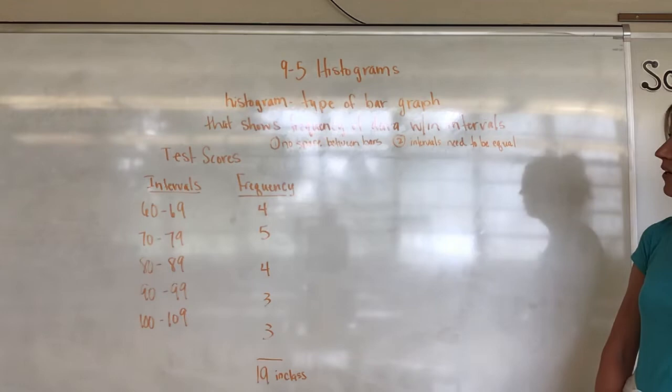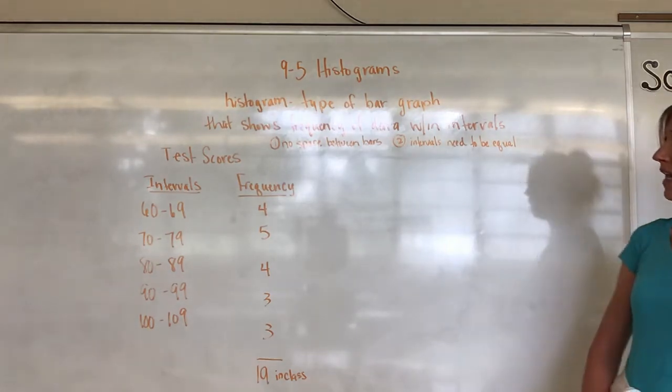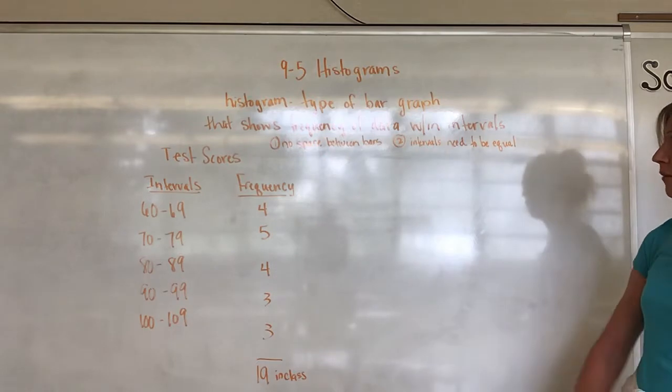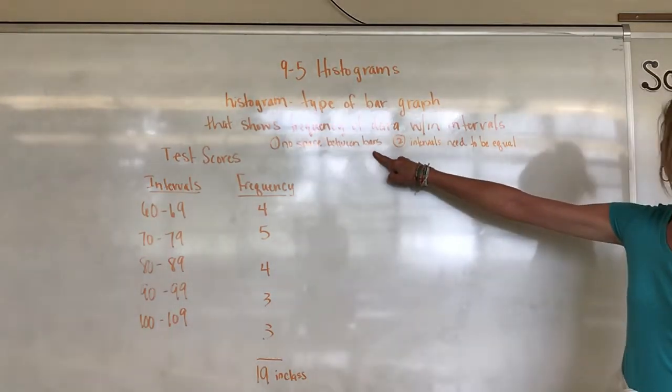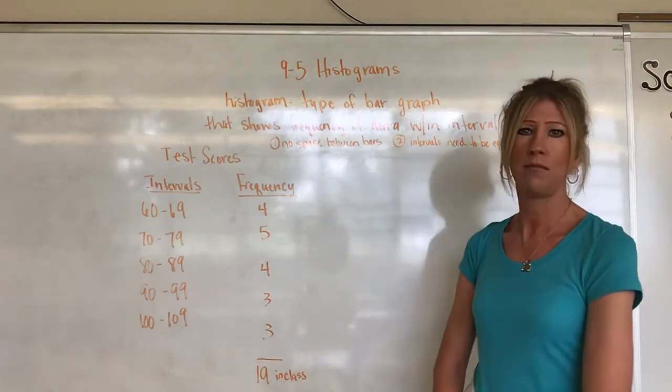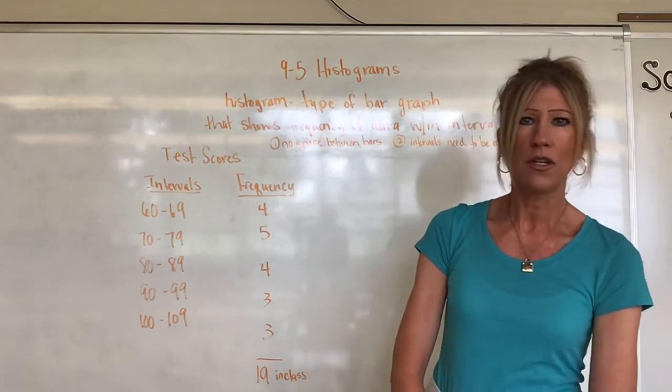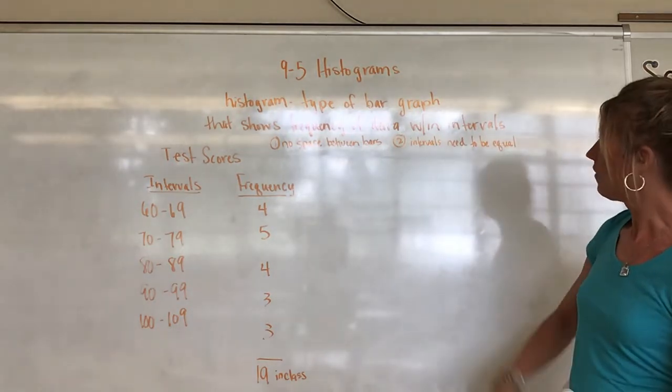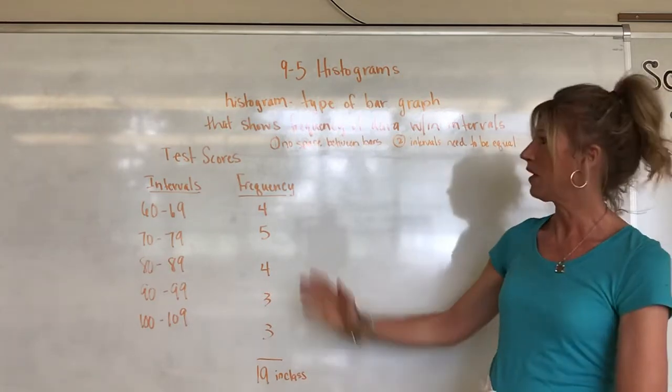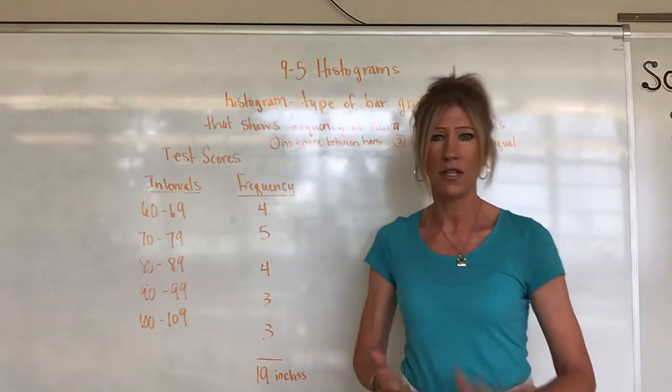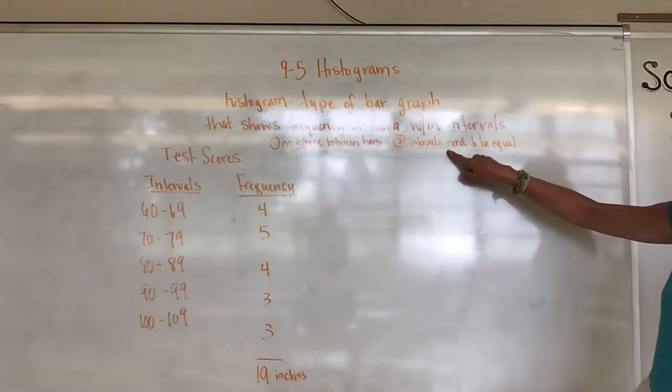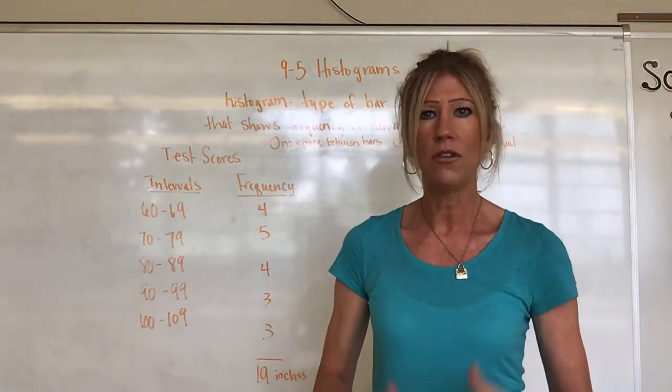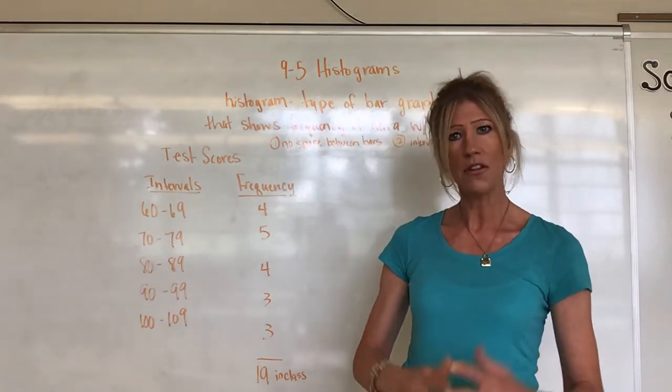Let me move back so you can look at the definition and get that into your notes. A histogram is a type of bar graph, so we are going to be seeing bars, but there's a couple things that we want to keep in mind. One, we are not going to have any space between our bars. The second thing, we are going to be using intervals. These intervals need to be equal. That means when you create your intervals for whatever makes sense with your data, your intervals are all equal. They're the same amount.